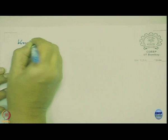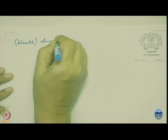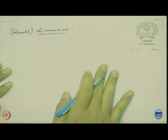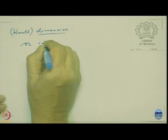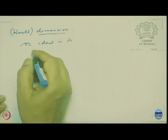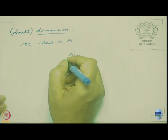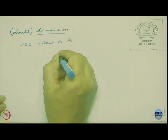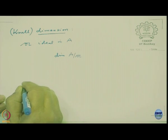Now I want to recall the definition of Krull dimension. Krull was a professor who proposed this algebraic definition by looking at the geometric definition — geometric definitions are older and more intuitive. If you have an ideal a in A, you have the residue class ring A/a. The Krull dimension of the ring A I will denote simply by dim A.